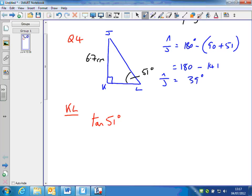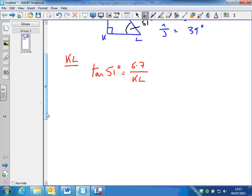Tangent of 51 degrees equals the opposite, which is 6.7, over the adjacent, which is KL. Rearranging by multiplying both sides by KL and dividing by tan 51, we can work out KL. There's no harm in going straight to the answer, multiplying by KL and dividing by tan 51 in the same step, but only do that when you're confident.